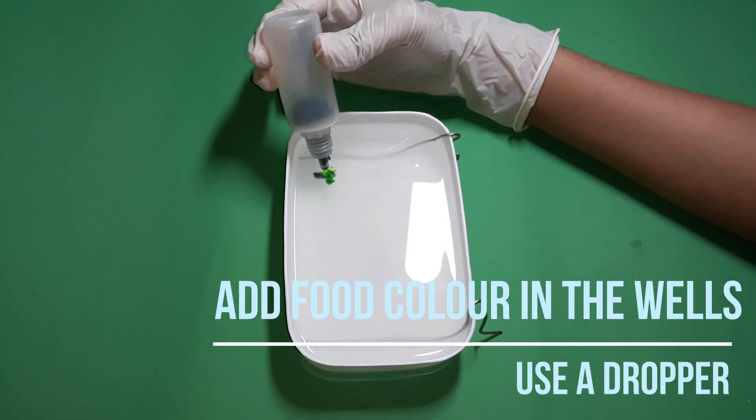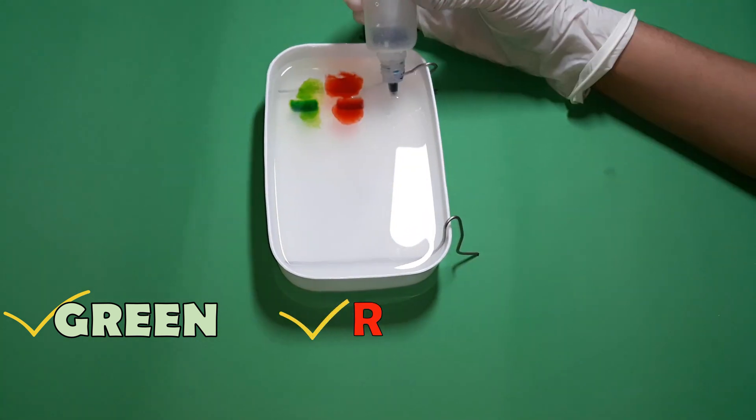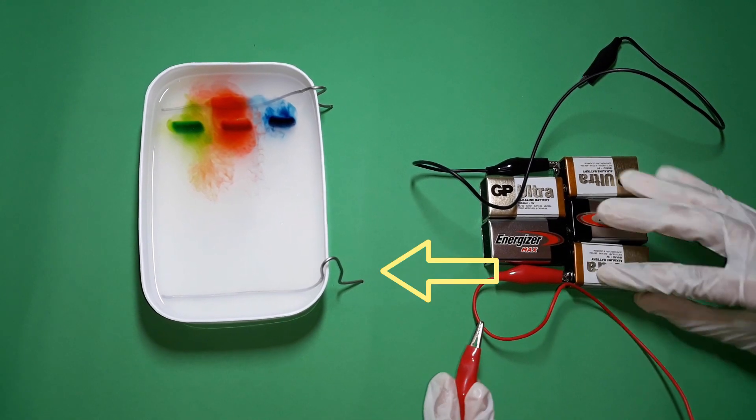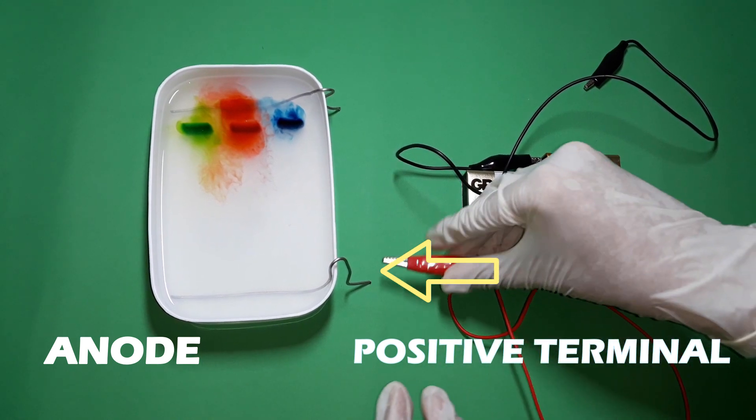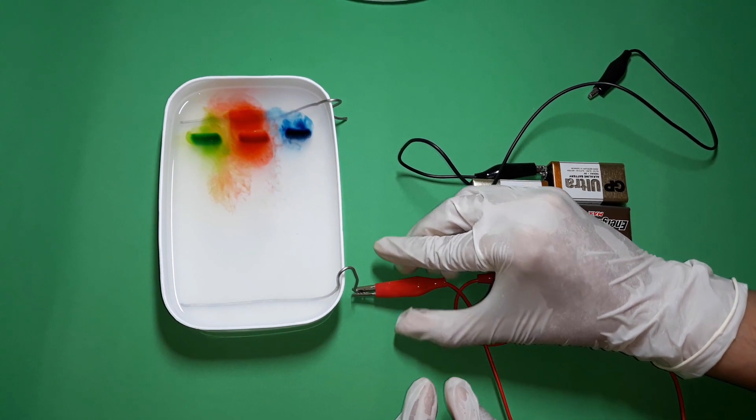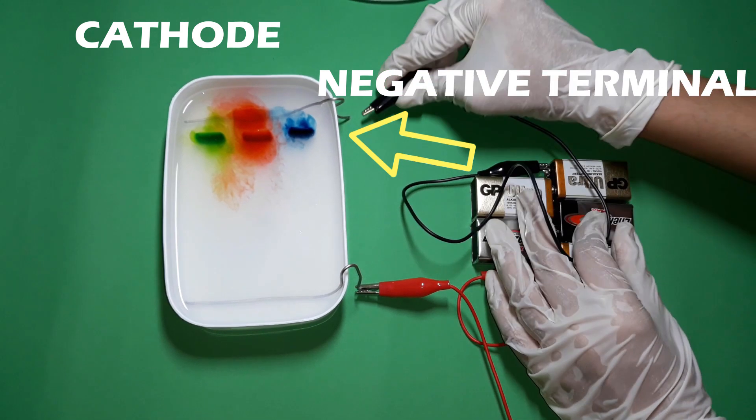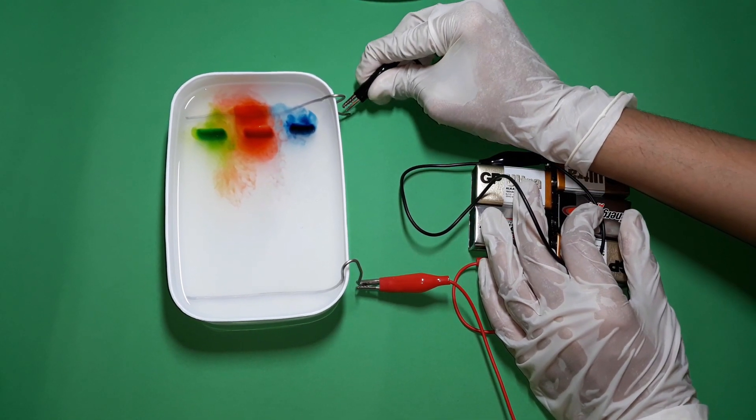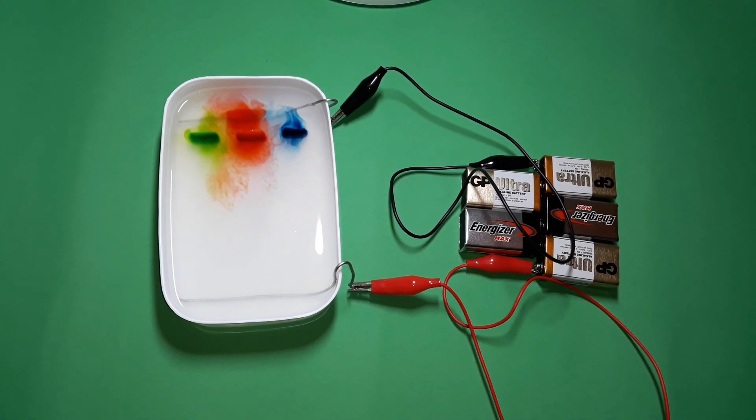Now, carefully add the 3 food colors into the wells using a dropper. For completing the circuit, the red wire connected to the positive terminal should be connected to the anode away from the wells. Similarly, the black wire connected to the negative terminal should be connected to the cathode end nearby the wells. Be careful that you do not reverse the connection or the food color will start migrating backwards.